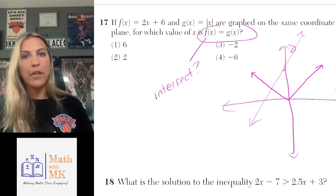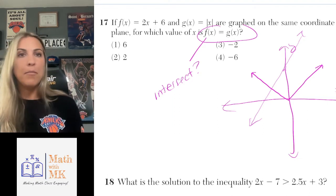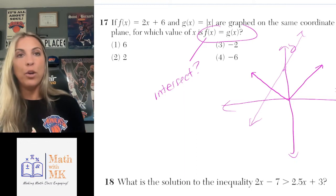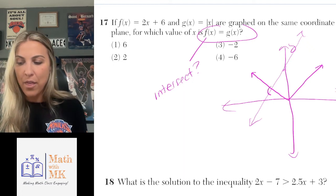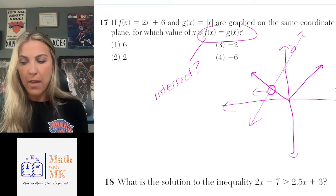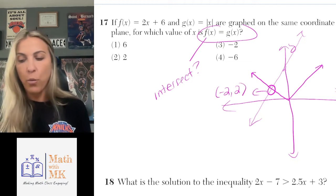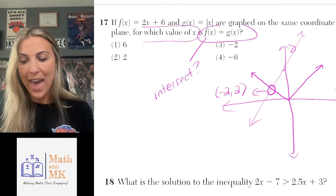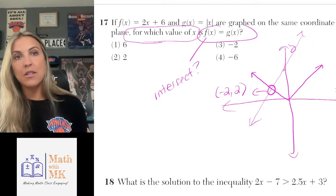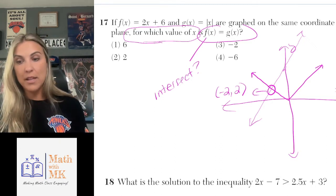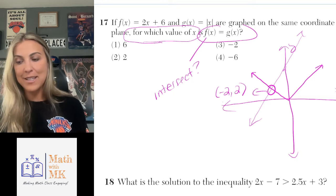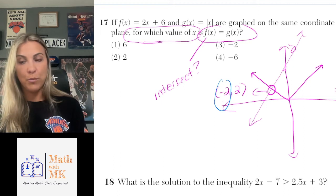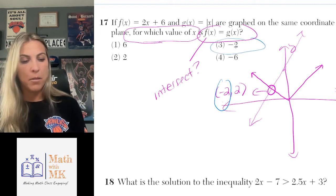On your graphing calculator, when you put both equations in you should see them intersect at one point. We're looking for where these two functions intersect, and that happens at the point negative 2, 2. But the problem is asking for which value of x — so when I look at the ordered pair where they intersect, the x-value is negative 2. So my answer here is number 3.